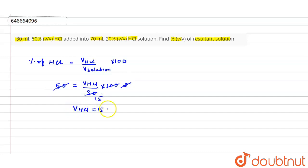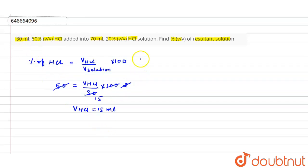We can solve this directly as well: we have 30 ml of solution at 50% HCl, so 50 percent of 30 is simply 15 ml.